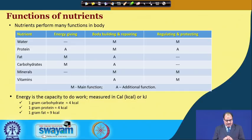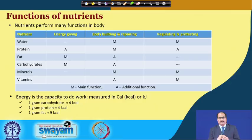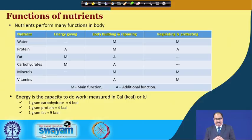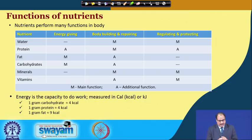Protein's main function is body building and repairing, while additional functions include energy giving, regulating and protecting. Fats and carbohydrates are mainly consumed for energy purposes — their main function is energy giving, whereas body building and repairing is an additional function. Minerals' main function is body building and repairing as well as regulating and protecting body processes.